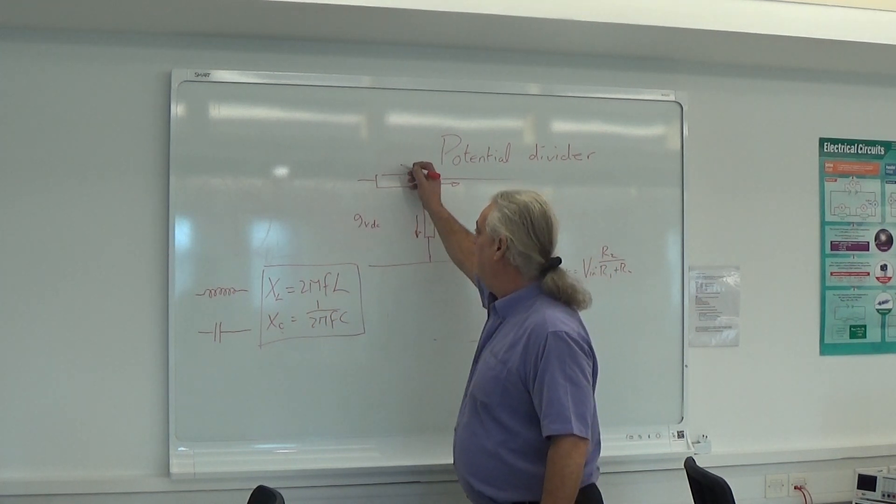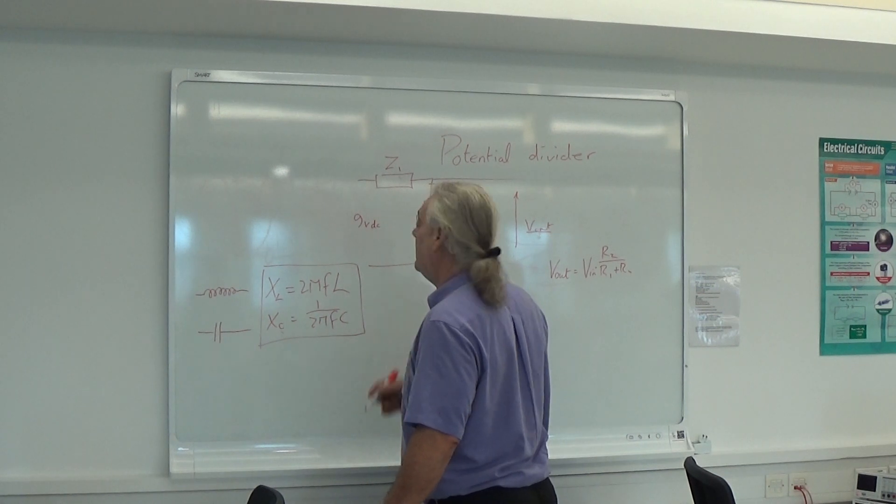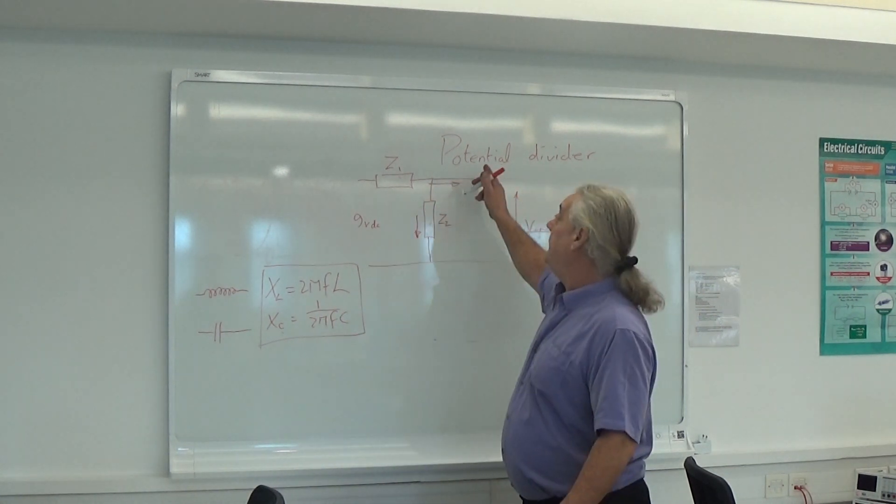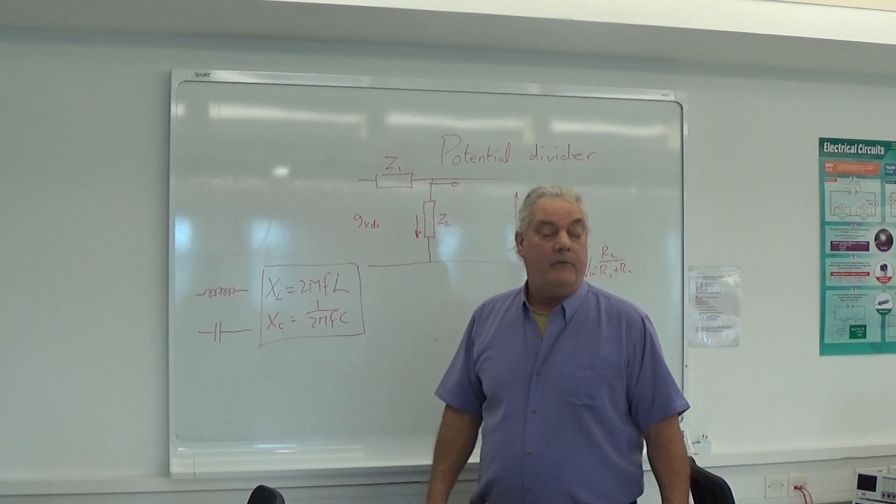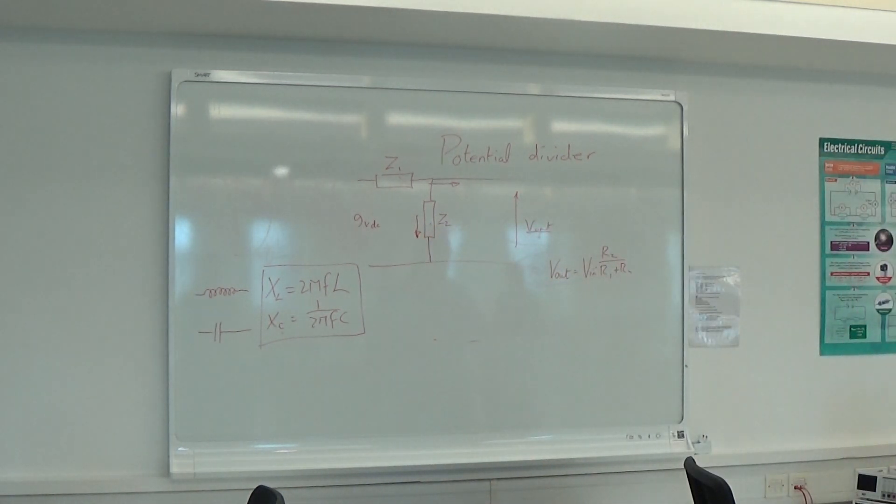What we can say here is if this is Z1 and this is Z2, now we've moved our potential divider equation into the complex impedance domain.